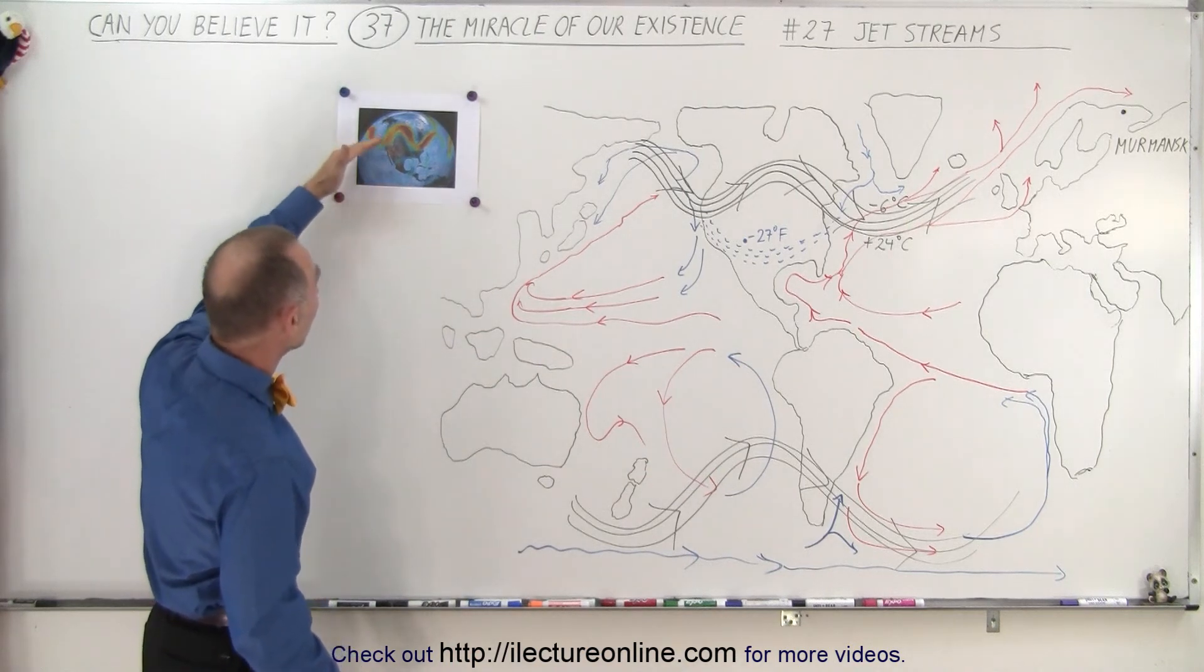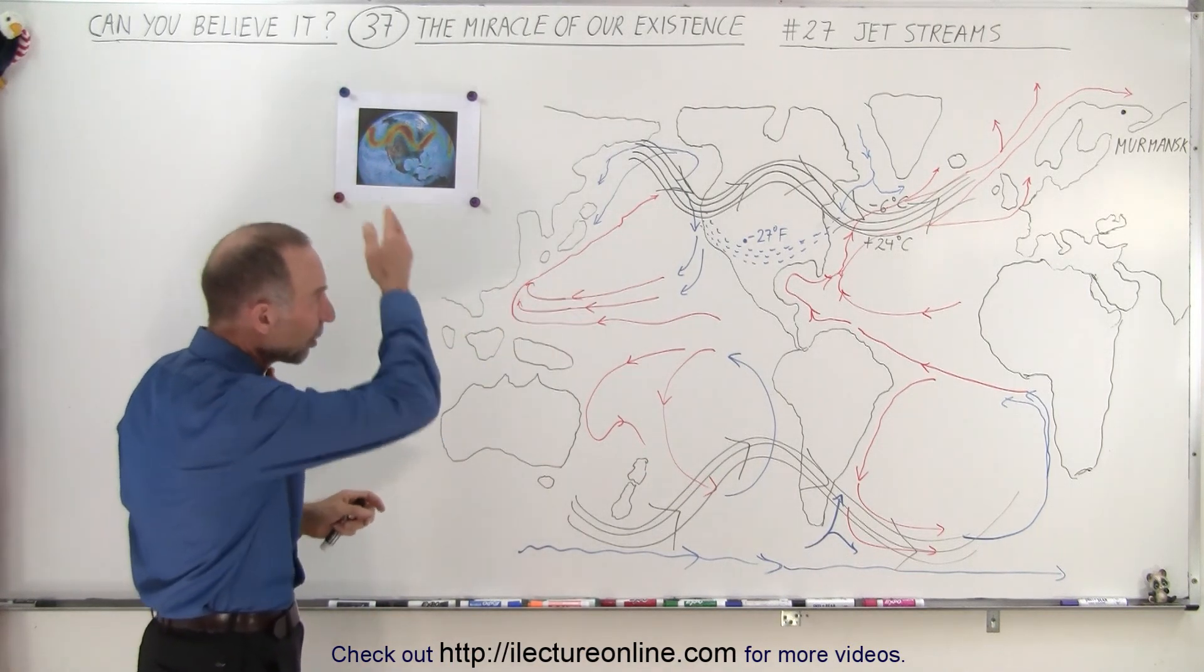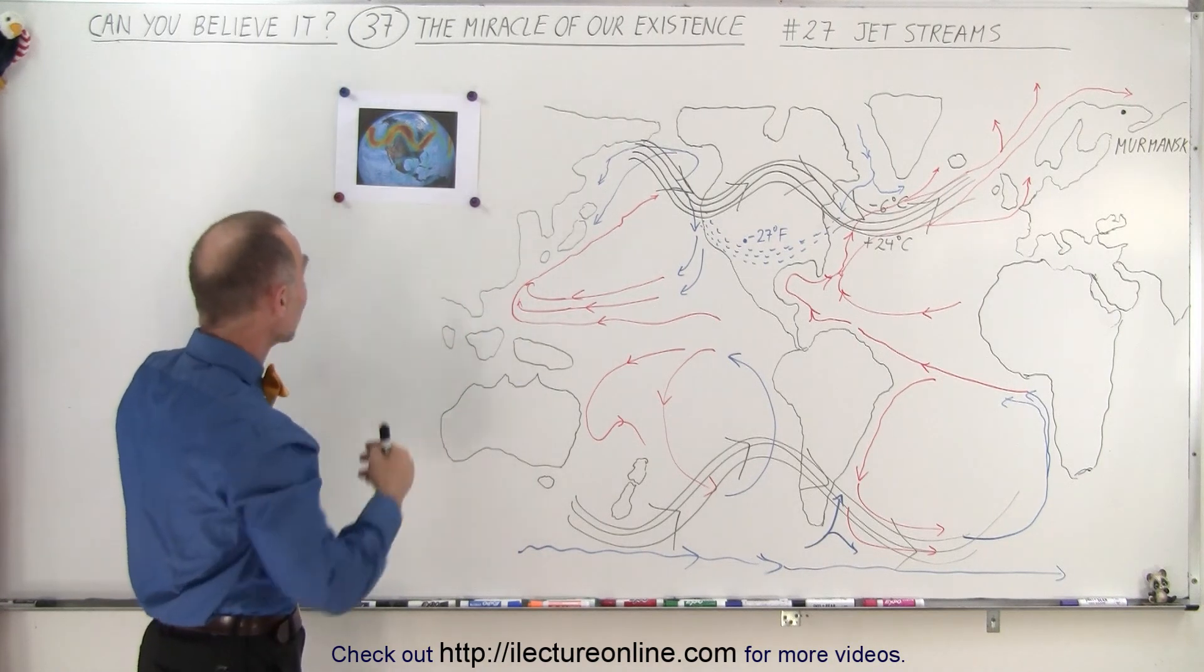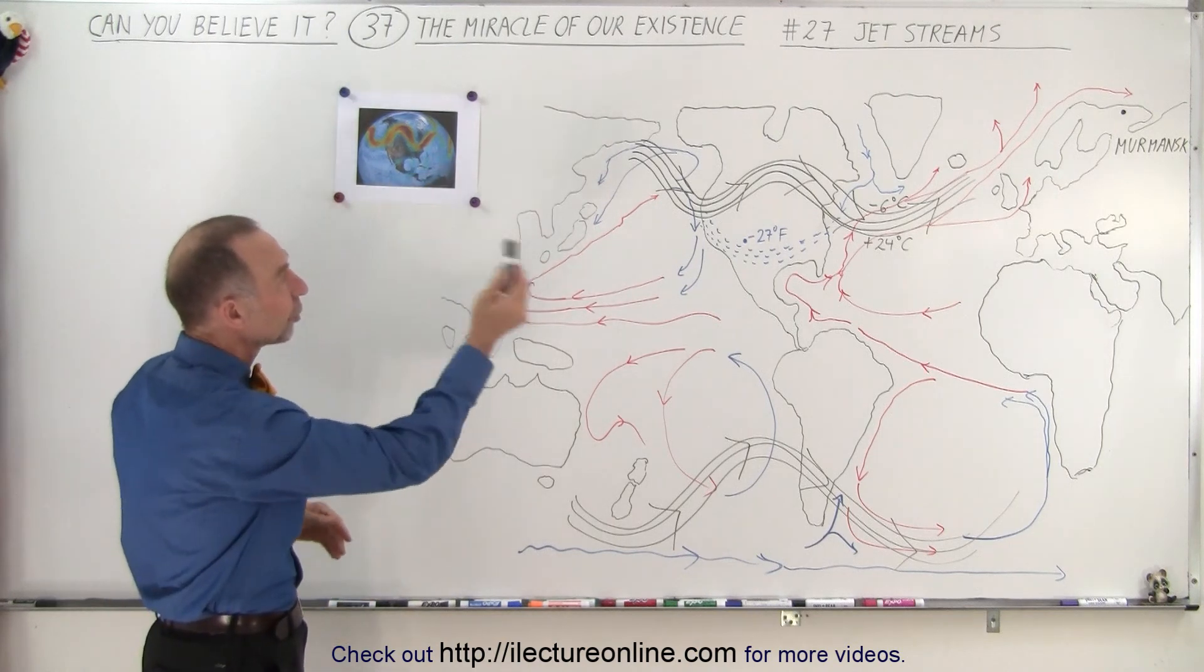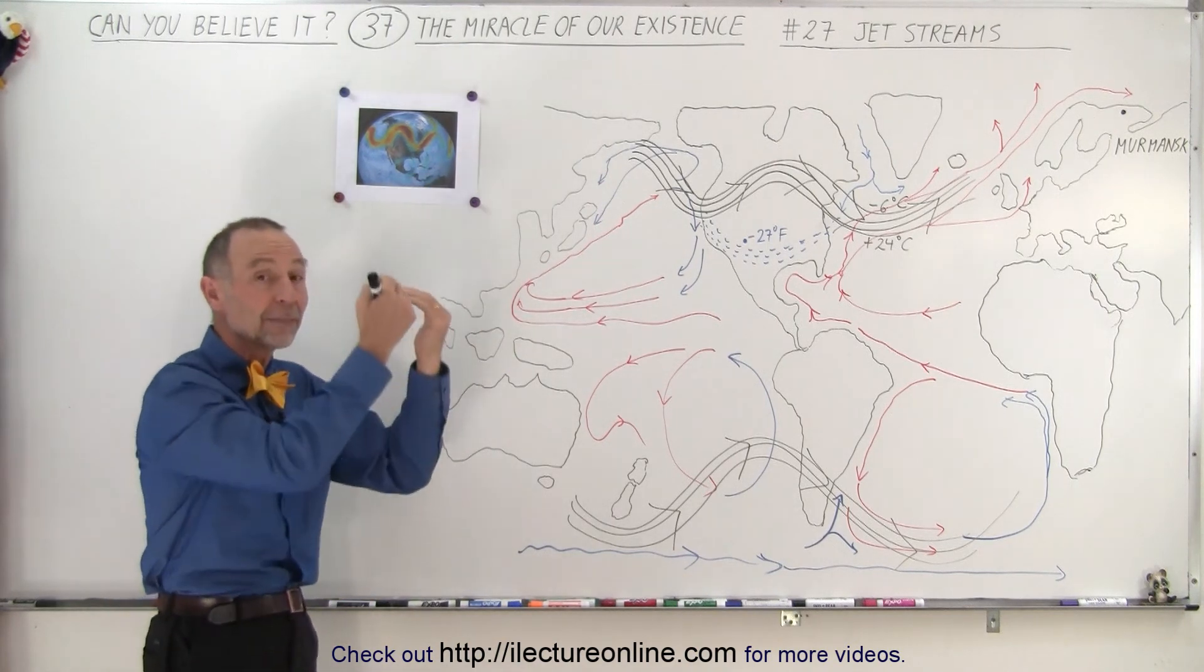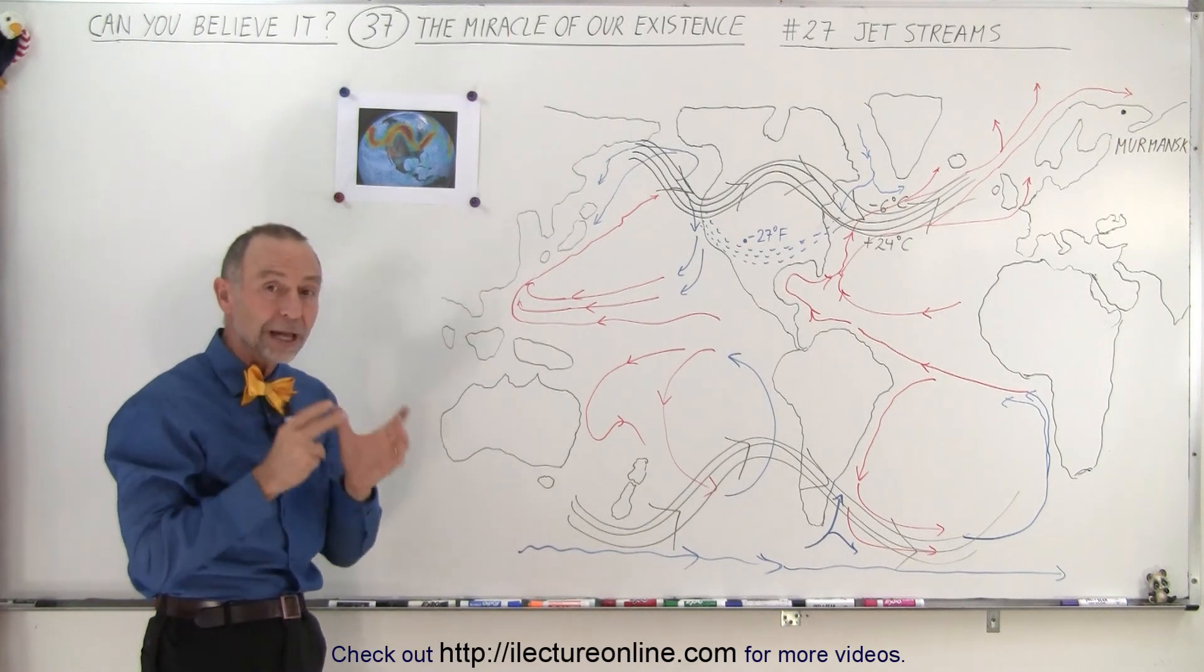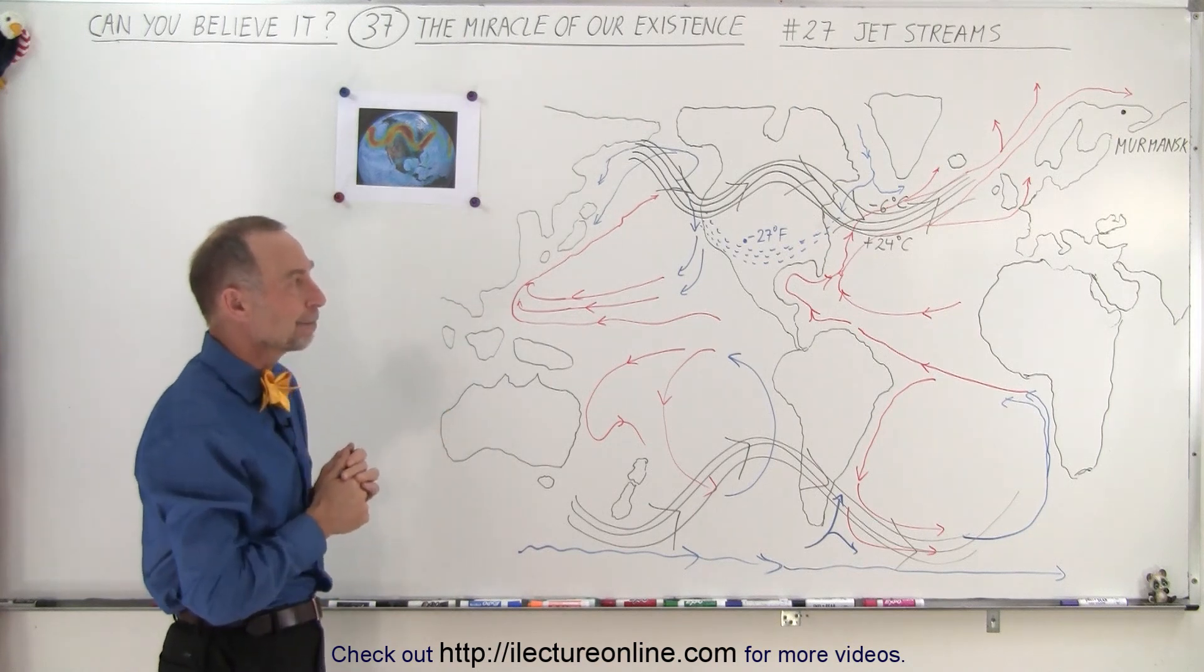Here we have a picture that depicts one of those jet streams. Now it's not a straight stream across, it meanders up and down, and it changes position. Sometimes it dips down a lot further, it dips up, sometimes it stays closer to the Arctic Circle, sometimes it comes way down. It varies, and because of that, the weather, especially during the winter time, can be severely affected by that.